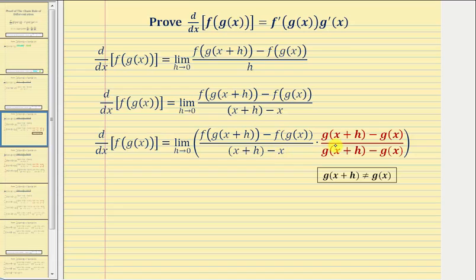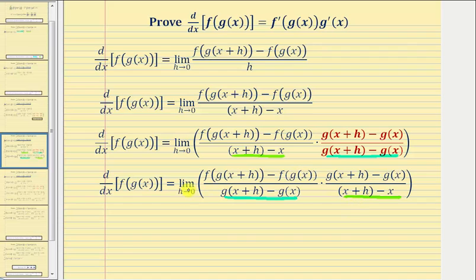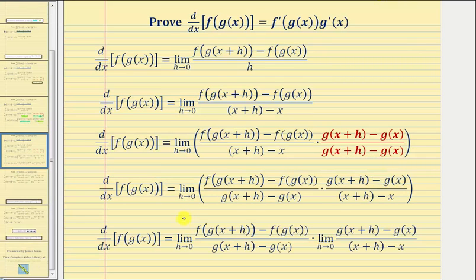Instead of finding the products, we're going to use the commutative property of multiplication and change the order of multiplication in the denominator. Notice that g of the quantity x plus h minus g of x is now the denominator of the first fraction, and the quantity x plus h minus x is now the denominator of the second fraction. Now we have the limit as h approaches zero of a product, so we can write this as a product of two limits: the limit as h approaches zero of the first fraction times the limit as h approaches zero of the second fraction.